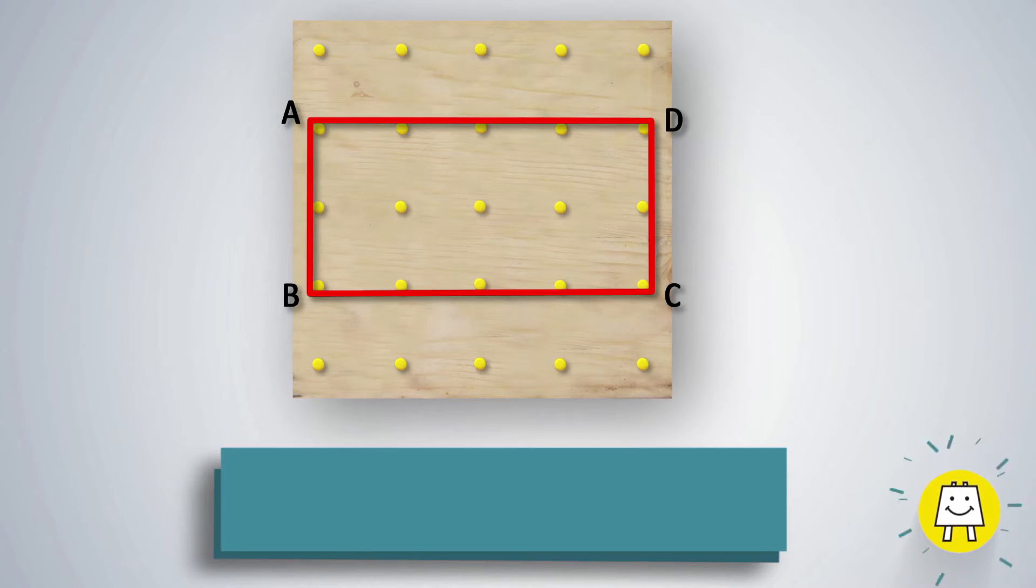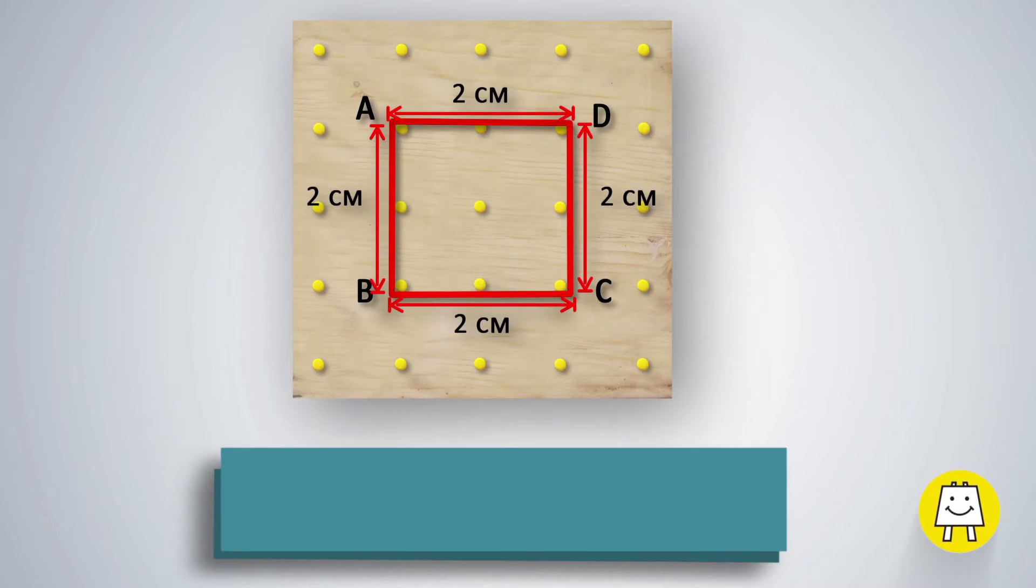Here is a fun fact. A quick way to find the perimeter of a rectangle is to add its length and breadth and multiply by 2. In a square, since all sides are equal, the perimeter is 4 times the length of one side.